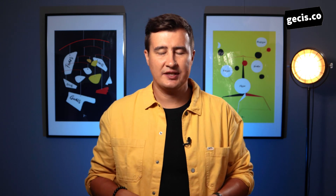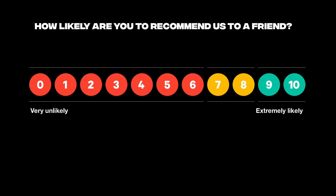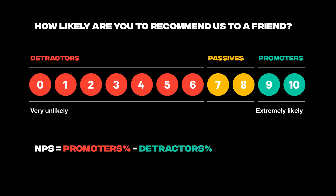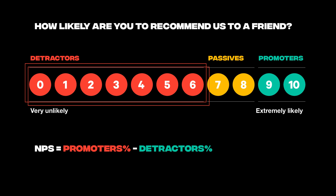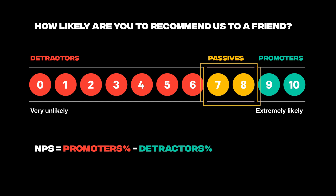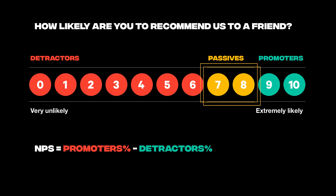Happiness measures how users feel about your product — are they satisfied with the quality? You need measures of user attitudes, which are often collected via surveys. For example: satisfaction, perceived ease of use, and Net Promoter Score. NPS is a great tool that asks customers how likely they would recommend your product or service to others on a scale of 0 to 10. It's calculated by subtracting the percentage of customers who answer 6 or worse — known as detractors — from the percentage who answer 9 or 10, known as promoters. Passives, with scores of 7 or 8, do not actively recommend a brand but are also unlikely to harm it through negative word of mouth.